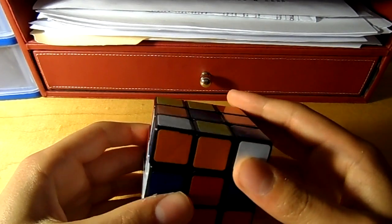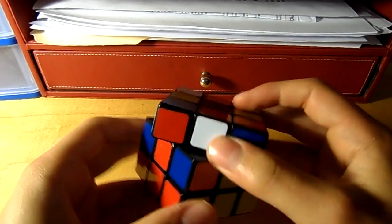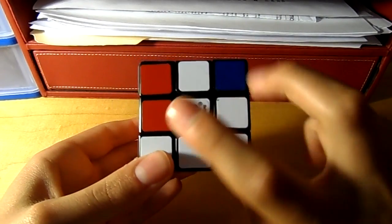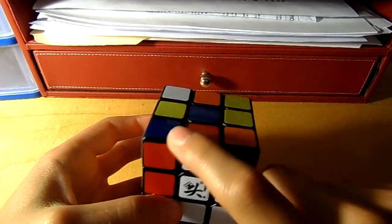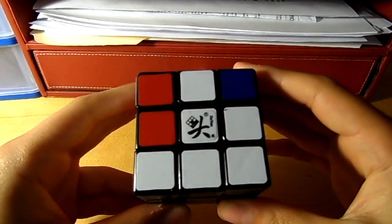Looking around the cube, here's one: the white and red. And it's a good one because here's the white, here's the red, doesn't have any blue on it. So you know that it has to go right here.